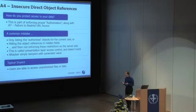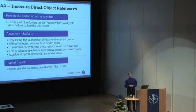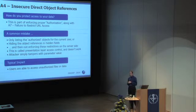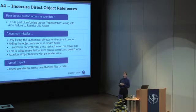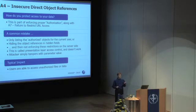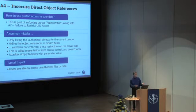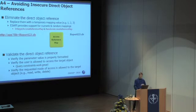Insecure direct object references was in the old top ten and hasn't changed much, but we see a huge amount of failure here. When developers have a parameter referring to a specific object — whether a file, database record, or otherwise — it's usually the actual name of the target object, making it trivial to change and access someone else's data. AT&T had a really bad day recently when they lost a hundred thousand email accounts from their iPhone 4 wish list because attackers found one parameter on an unauthenticated page where you just put in the phone serial number and iterated through millions of them.